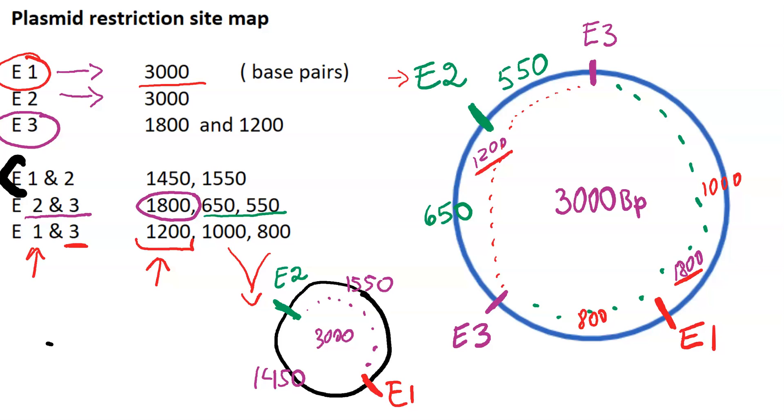So you see we had actually localized all the restriction sites on this plasmid. So that's how you work through this process and build restriction site maps using restriction enzymes.